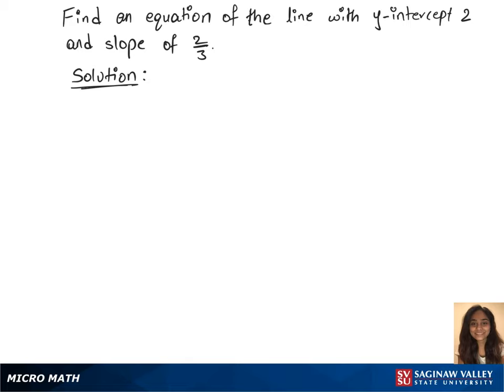To find an equation of the line with y-intercept 2 and slope of 2 over 3, we'll have to use the equation of the line formula, which is y equals mx plus b.